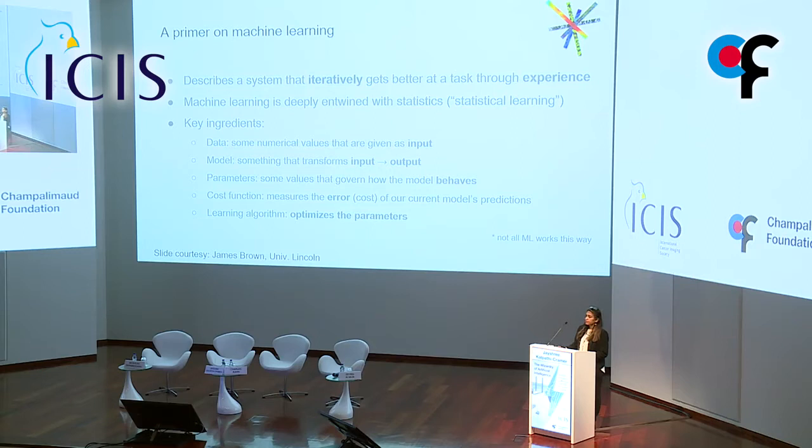This topic came up a lot earlier today in audience questions — how does one go through the process of curating data, creating a collection, and building a model? Briefly, a machine learning system is something that gets better through experience. The components involve having lots of data with lots of outcomes to predict. We have data going in, a model that transforms input into output, model parameters that define what the model does, and we minimize a cost function — the difference between the correct answer and what the model predicts — with an algorithm that optimizes those parameters.